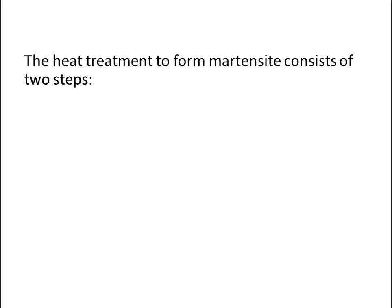Let's talk about the heat treatment process. The heat treatment to form martensite consists of two steps: the first one is austenitizing and the second one is quenching.